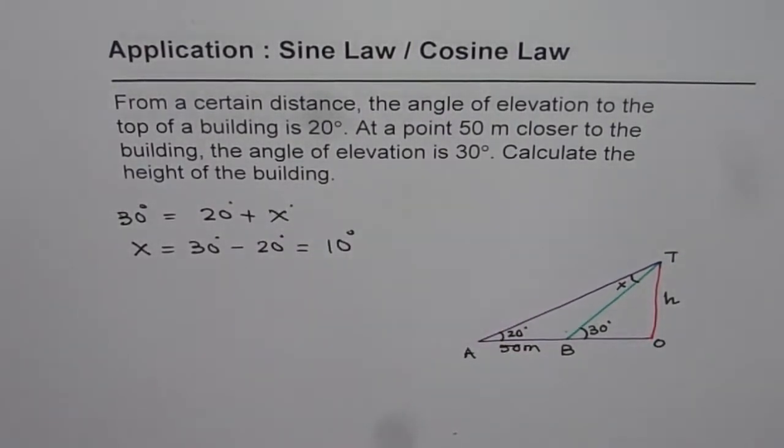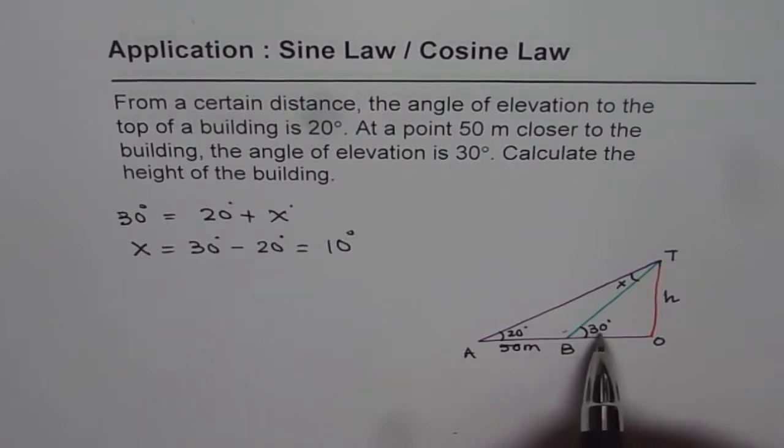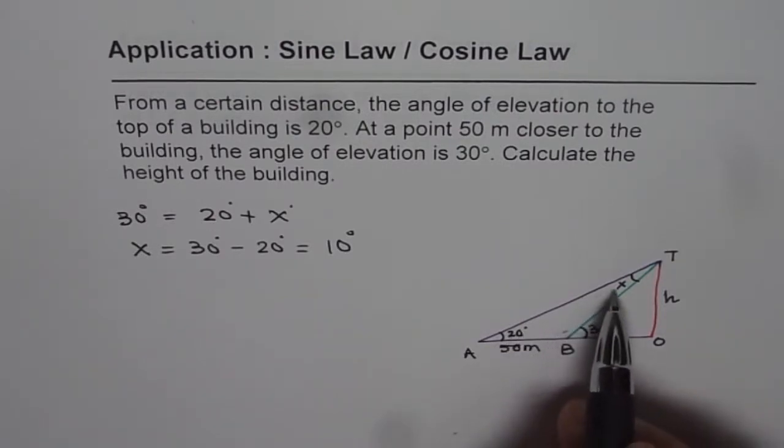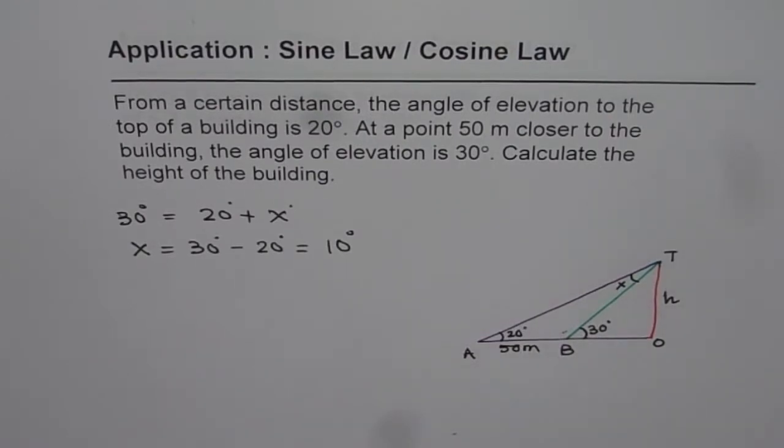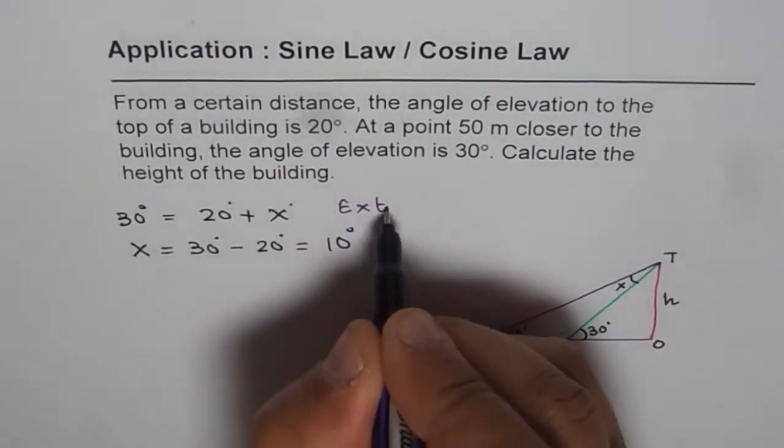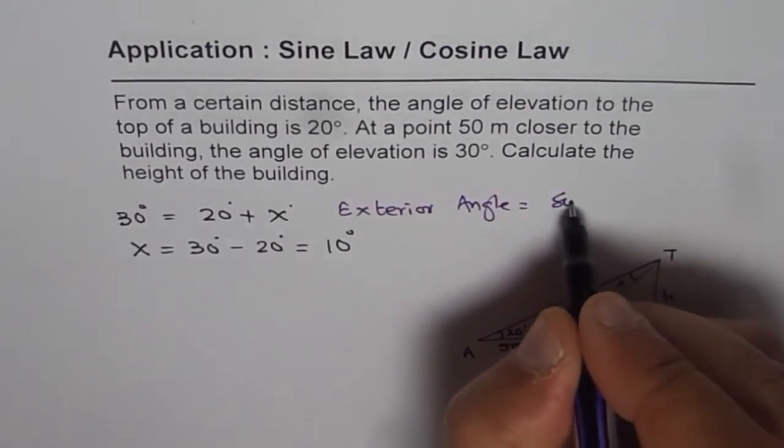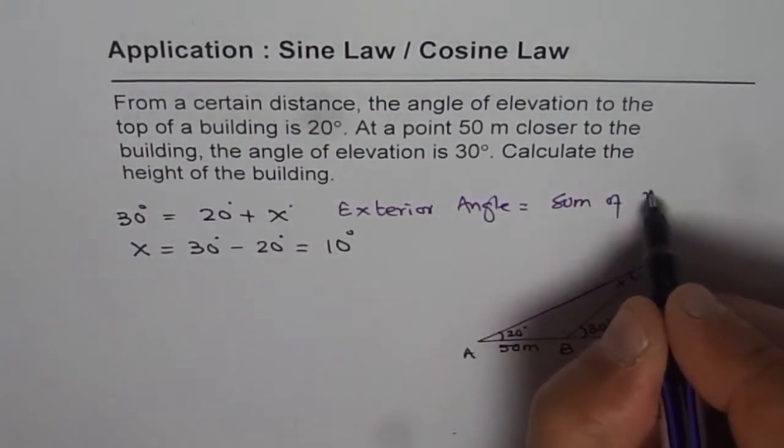And therefore we get x is equals to 30 degrees minus 20 degrees, which is 10 degrees. So that is one way of finding angle x. Well, what you can also do is you can find this angle which is 180 minus 30, so it will give you 150. Now 150 plus 20 is 170, so total should be 180, so that is 10, right? Again the same thing, but I like you to review some concepts of geometry.